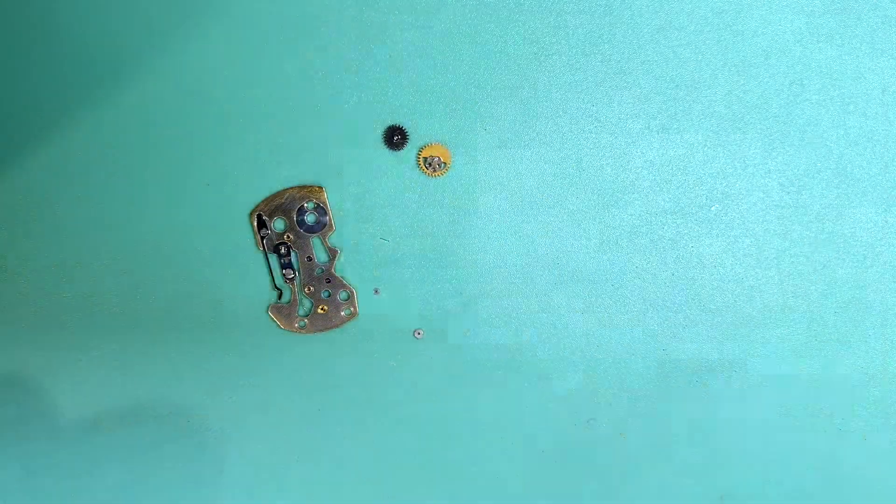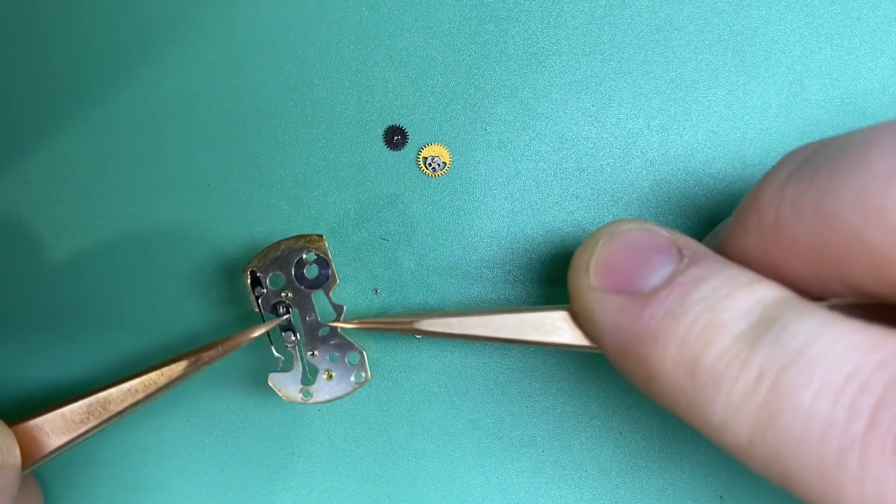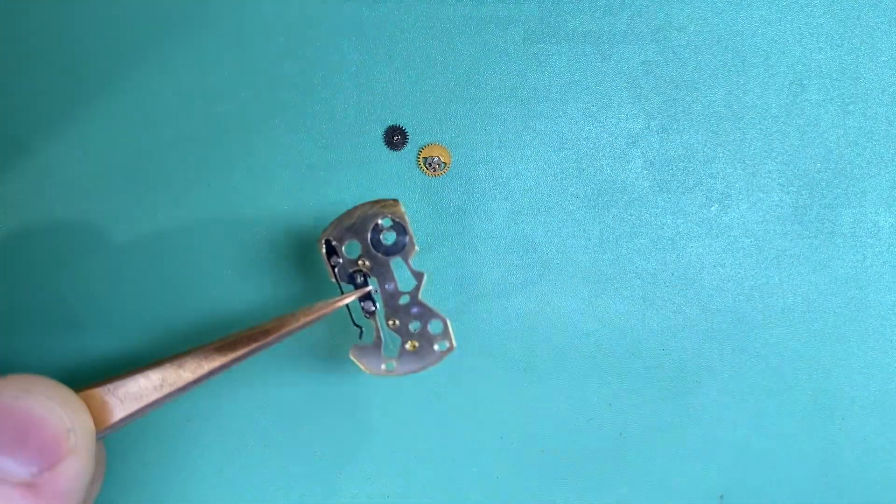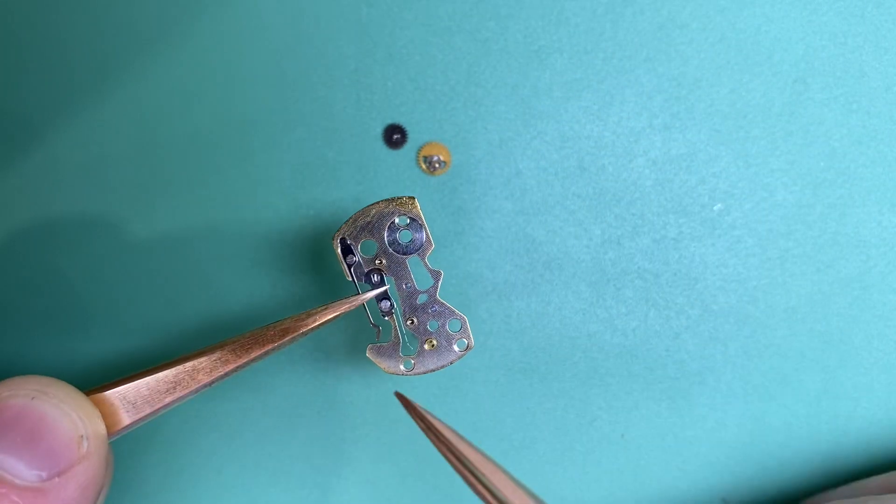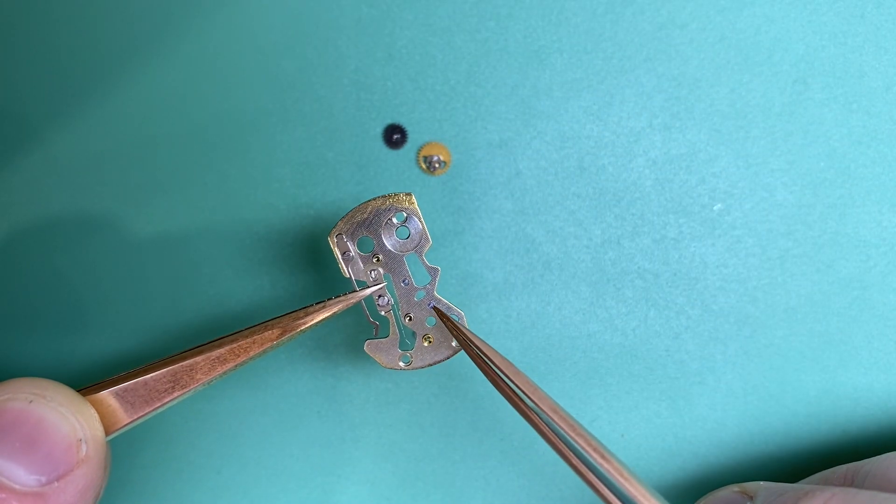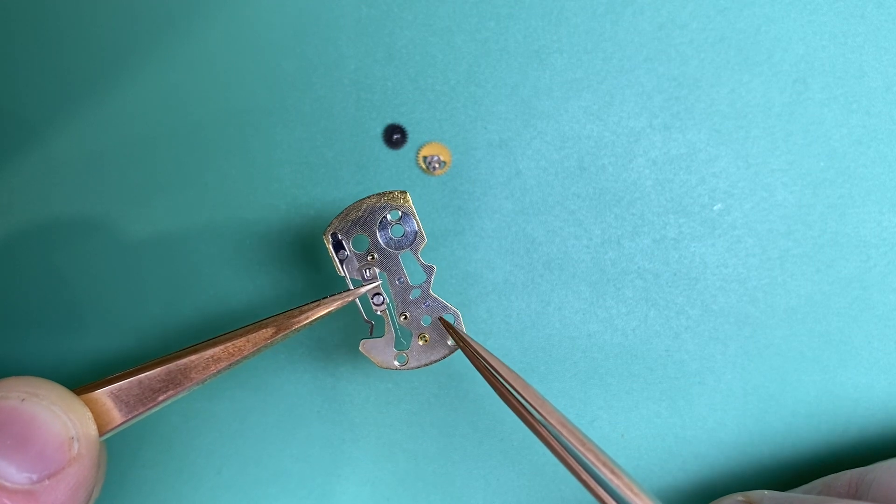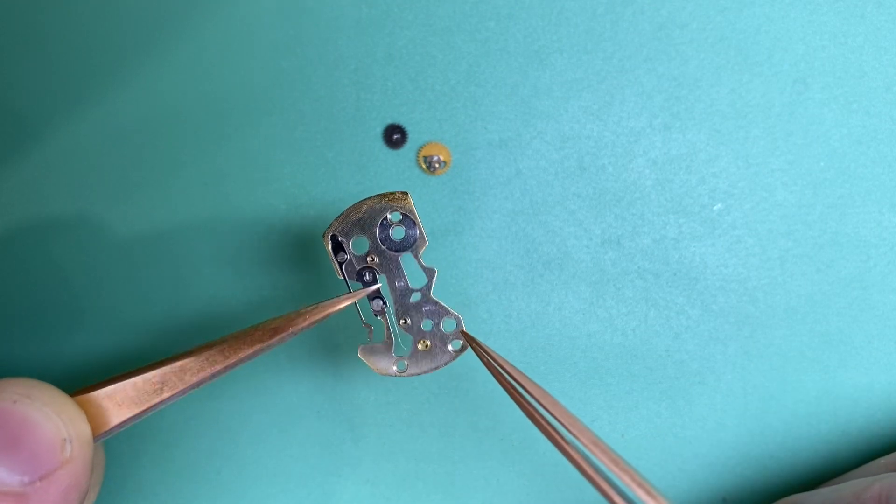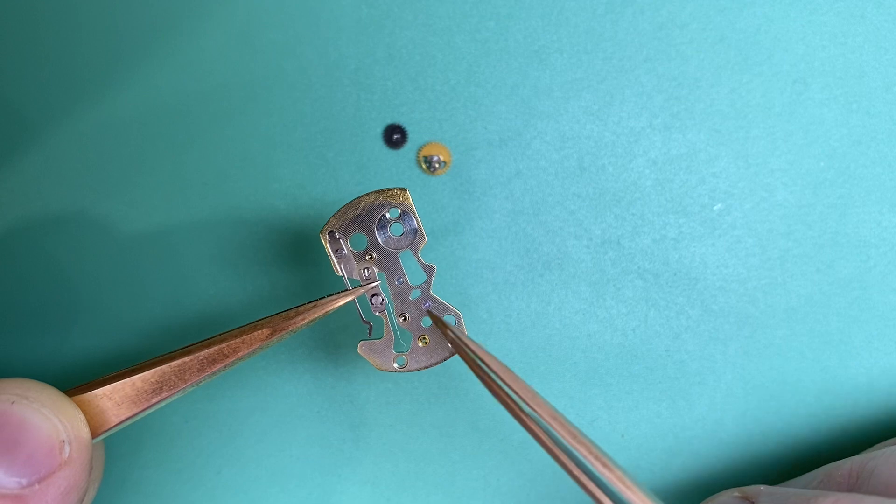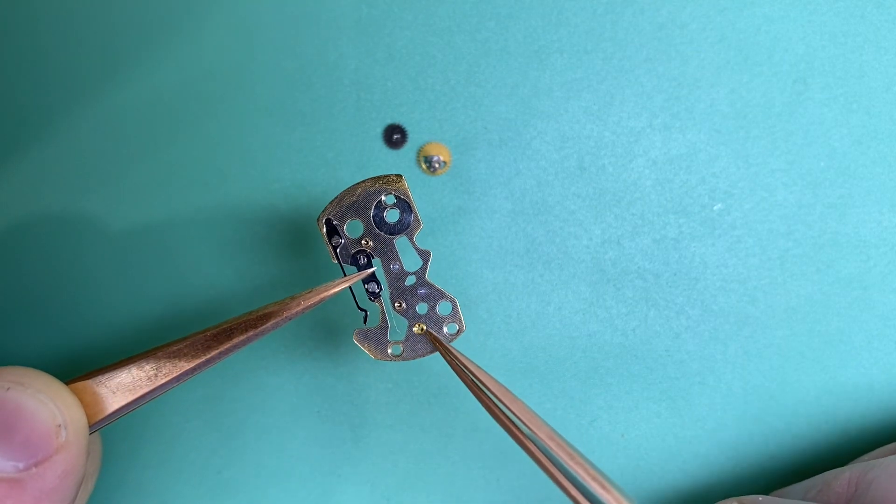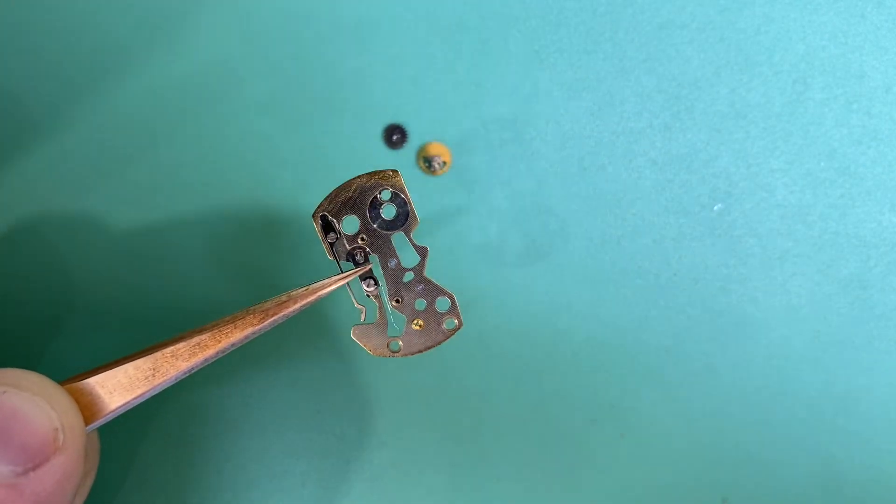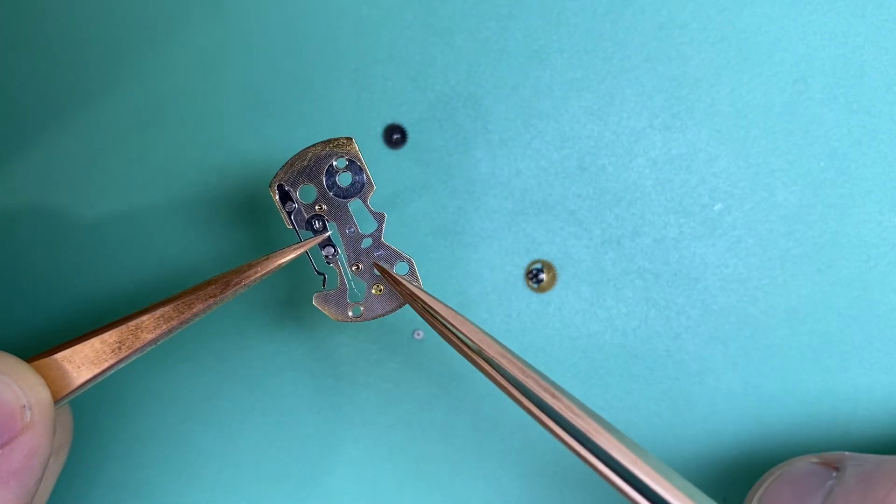So, what I've done here is I've actually installed an intermediate minute counter jewel in there to fix this problem and also prevent any further wear. And I've installed a new brass bushing for the minute recording wheel.